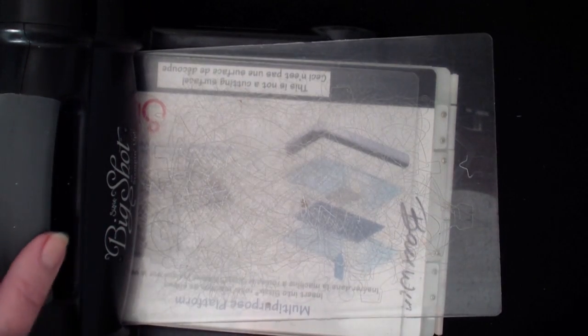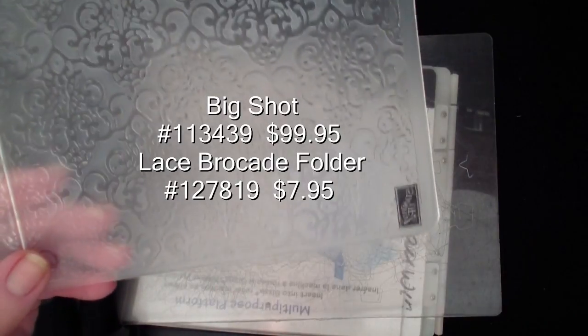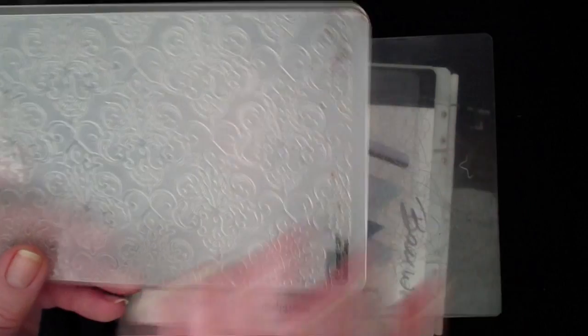I want to show you the supplies we're going to use. First, of course, we're going to use the Big Shot. How do we ever do a card without the Big Shot? We're going to use the embossing folder. I'm going to use the Lace Brocade. This is on page 6 of the Holiday Catalog, probably my most favorite frame right now.